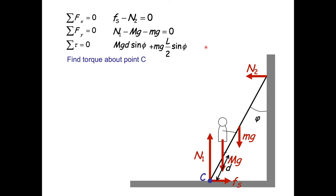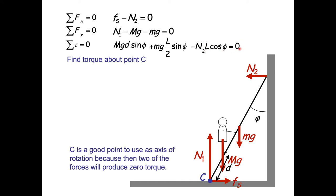Going in the counterclockwise direction is N₂, and since N₂ is perpendicular to these vectors, we have cosine phi rather than sine phi. So the torque equation is: capital MgD sin(φ) plus mgL/2 sin(φ) minus N₂L cos(φ) equals zero. We chose pivot C because two forces applied there produce no torque — their radial distance from the pivot is zero — making the expression simpler.